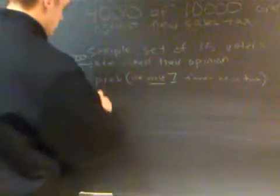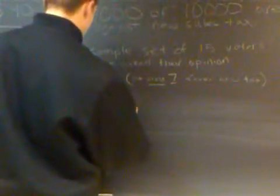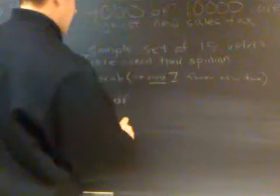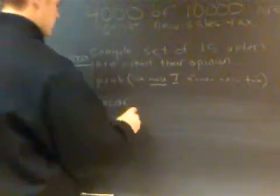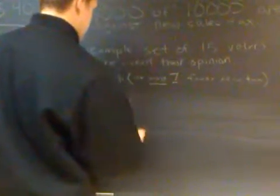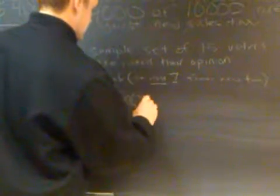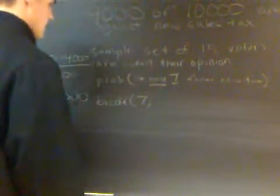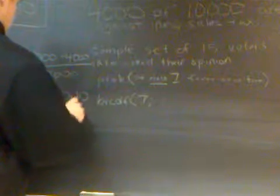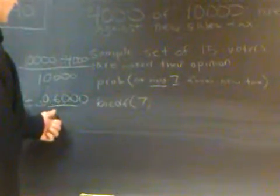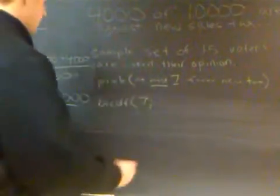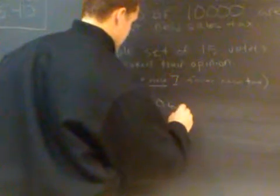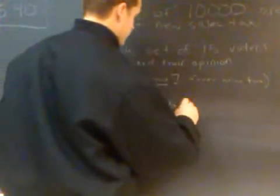So we take that, and this is obviously a binomial CDF, not PDF, because you're not asking for exactly 7. It's at most 7 favor the new sales tax. So by CDF, we're going from 0 to 7. And our probability of success in this case, because we're looking for favoring the new sales tax, is 0.6. And this is out of a sample set of 15.